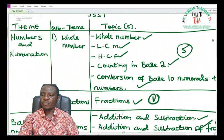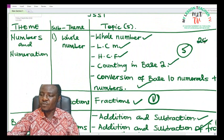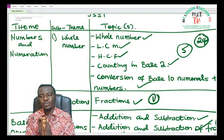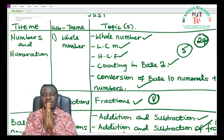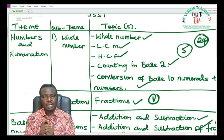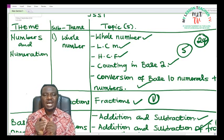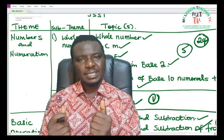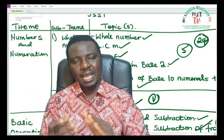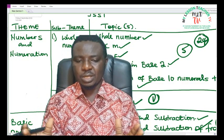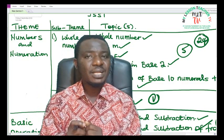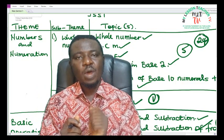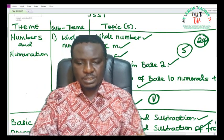In total, you have 24 topics to treat in JSS1. What we do as teachers is divide these 24 topics into three terms. If you divide 24 by 3, it gives you 8. So approximately, each term you are to study or you are to know 8 of these topics.